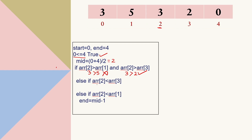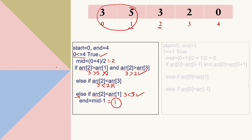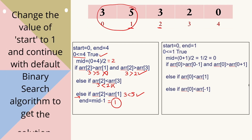In the else-if, we check if 3 is less than the element on its right, which is 2. This condition is also false. If it were true, we would move start, since a greater element exists to the right. Moving to the last else condition, we check if 3 is less than the element on its left, which is 5. This is true, so we look for the peak on the left side and shift end from 4 to mid-1, making end = 1.